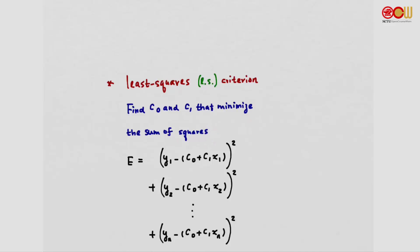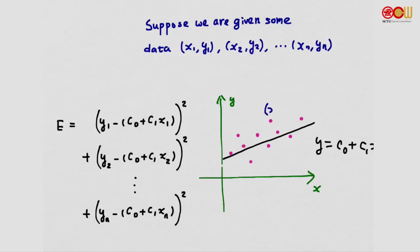The sum of squares E equals (y1 - c0 - c1*x1)² for the first data point, plus (y2 - c0 - c1*x2)² for the second data point, all the way to the last data point. For the first data point (x1, y1), the first term corresponds to the distance between y1 and the value of the line evaluated at x1.